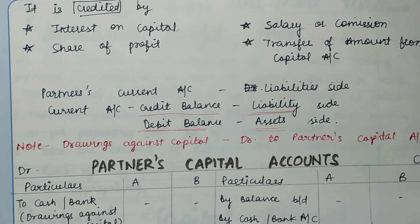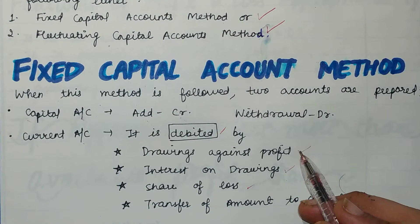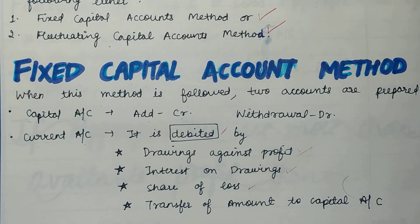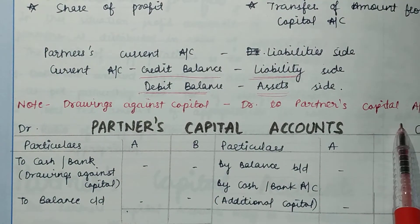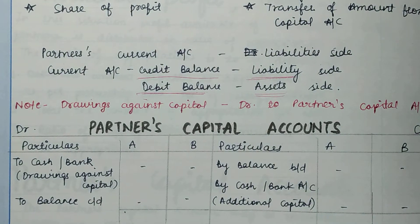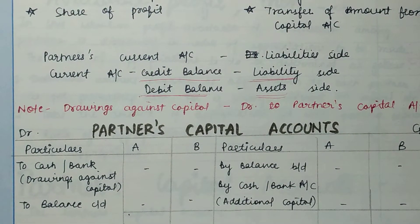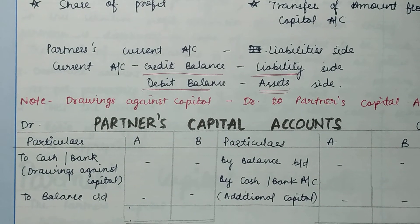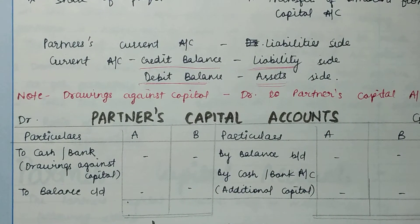Drawings against capital are debited in the capital account, whereas drawings against profit are debited in the current account. This is an important distinction. Remember: if drawings are against capital, we debit the capital account; if drawings are against profit, we debit the current account. In this video we will only cover the fixed capital account, and in the next video we will cover the fluctuating capital account.